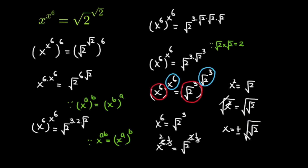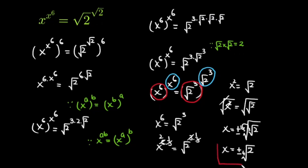We know that there is 2 here and 2 here, so this 2 multiplied with this 2 gives us the fourth root. So this is x is equal to plus minus the fourth root of 2. This is my final answer: x is equal to plus minus the fourth root of 2. I hope you like this video, thanks for watching.